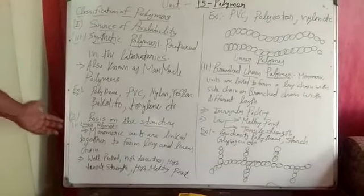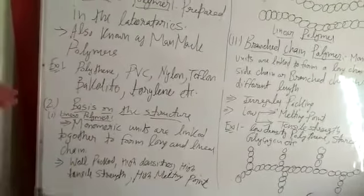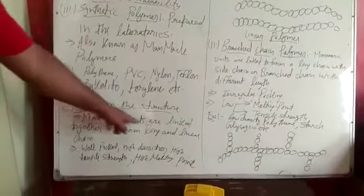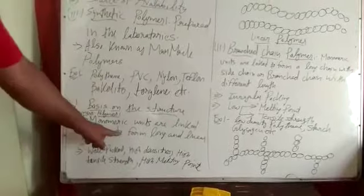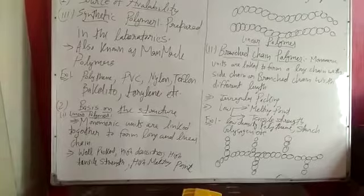This type of polymer, the monomeric units are linked together. This type of polymer is linked together to form long chains and linked linear chains.